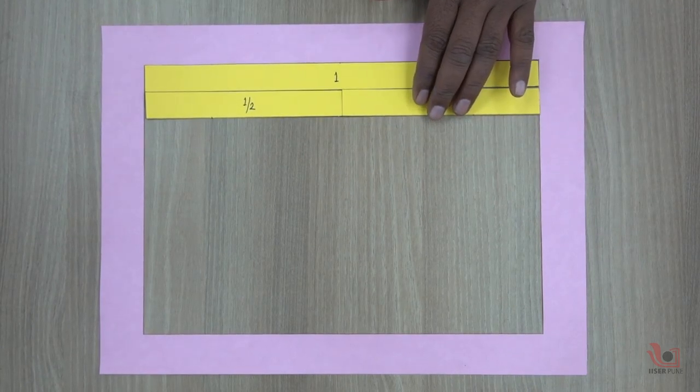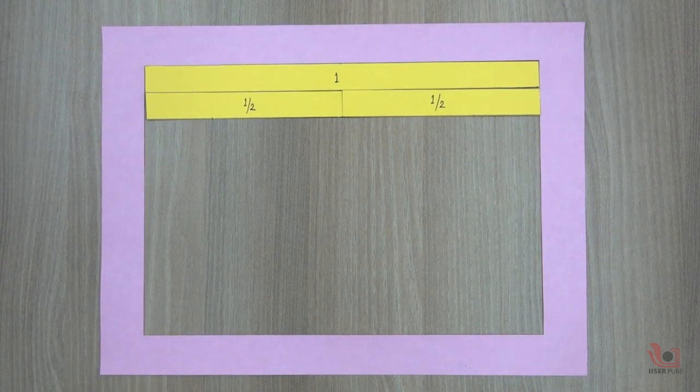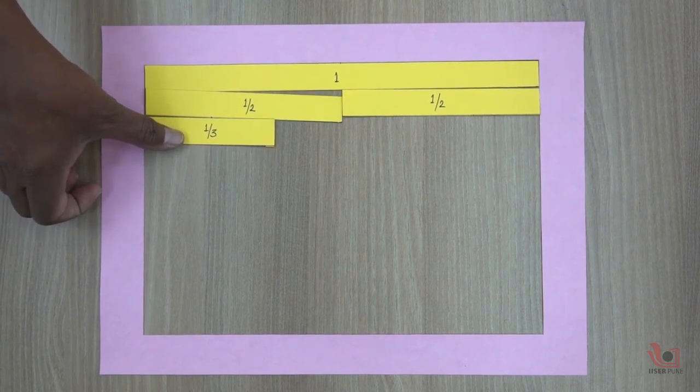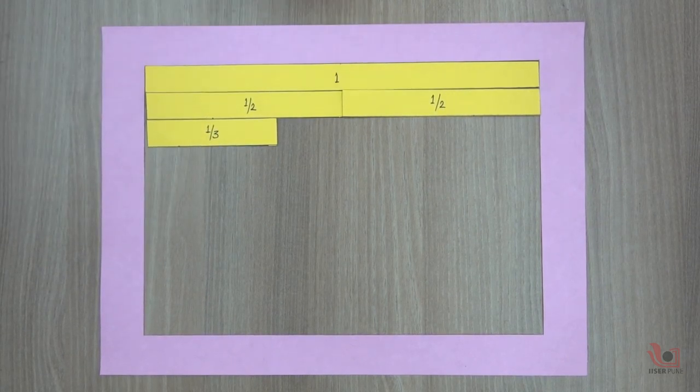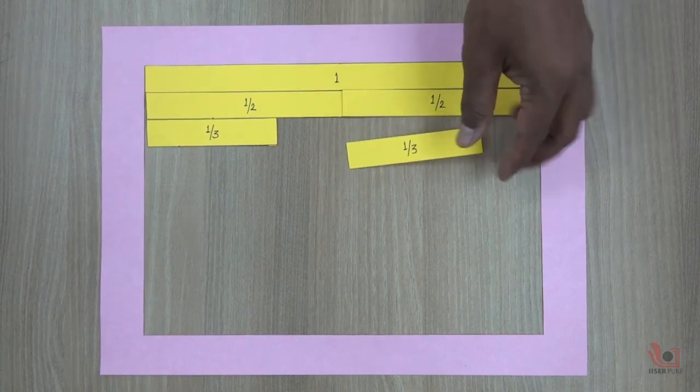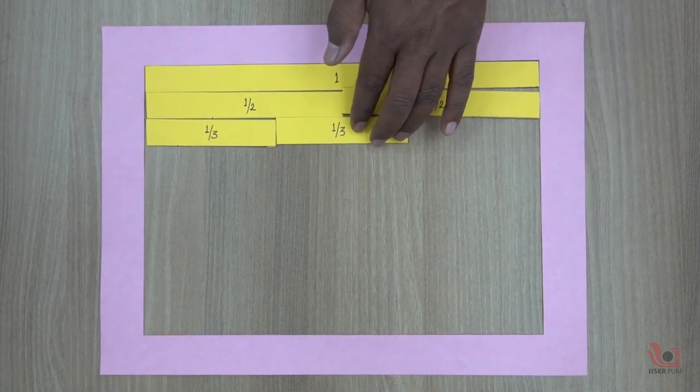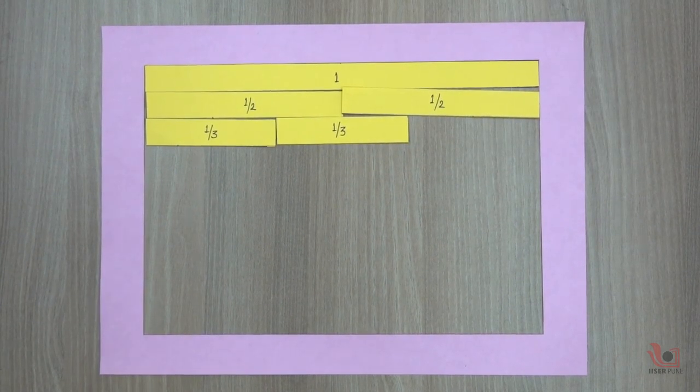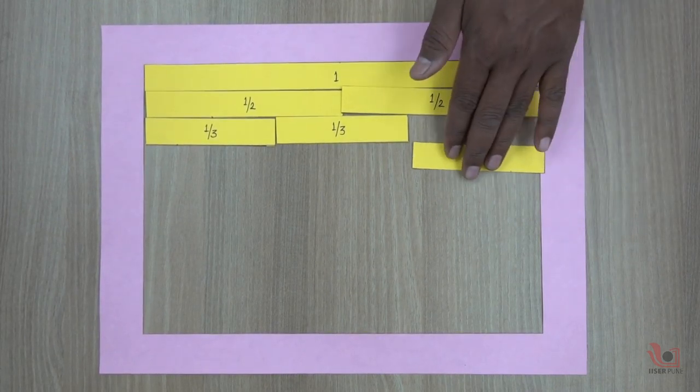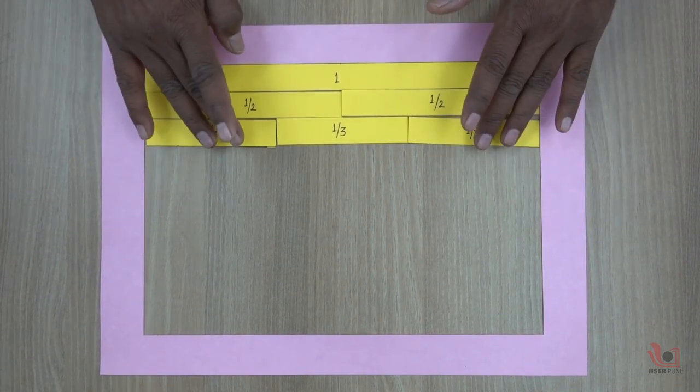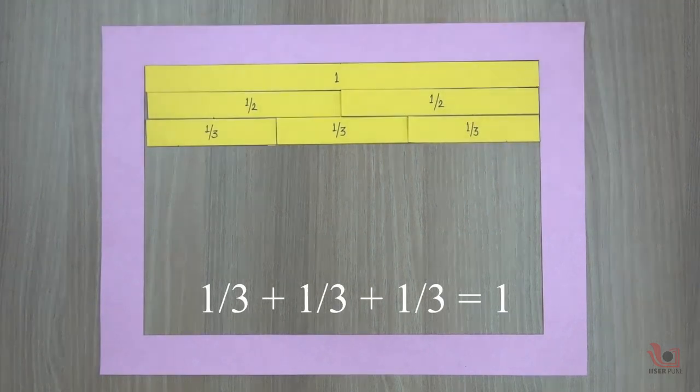This means the addition of the 2 halves is 1 whole. Now, take 3 strips and place them below the 2 halves strips. You will see that if you add 3 one-third strips again, you will get 1 whole strip.